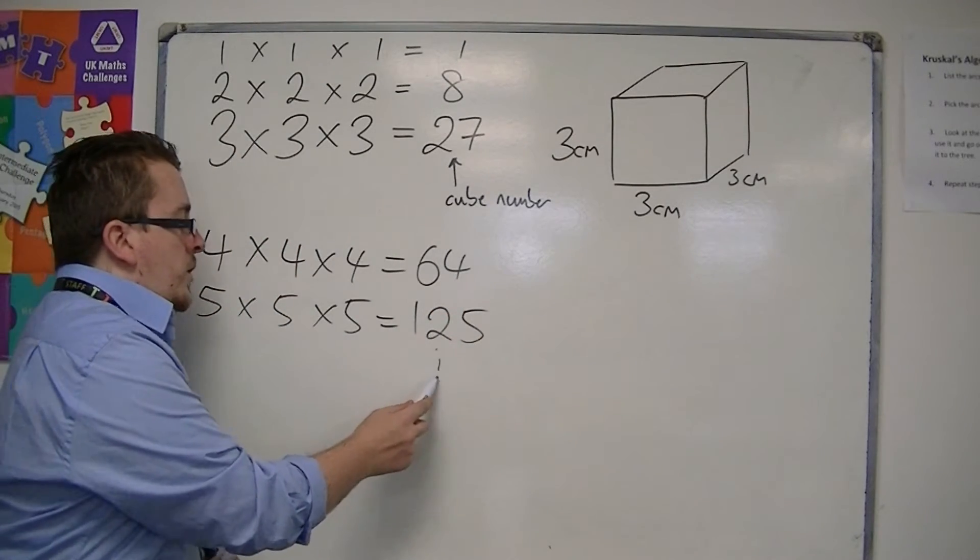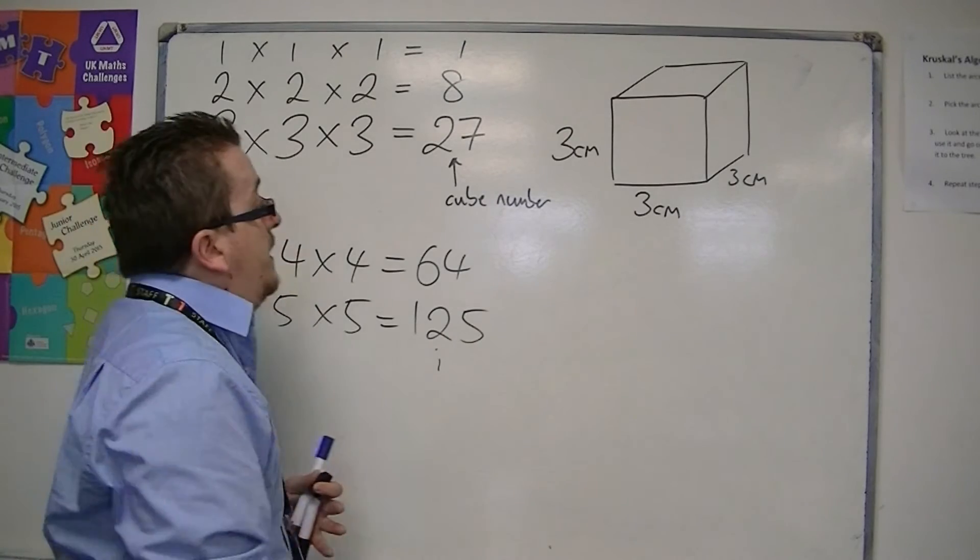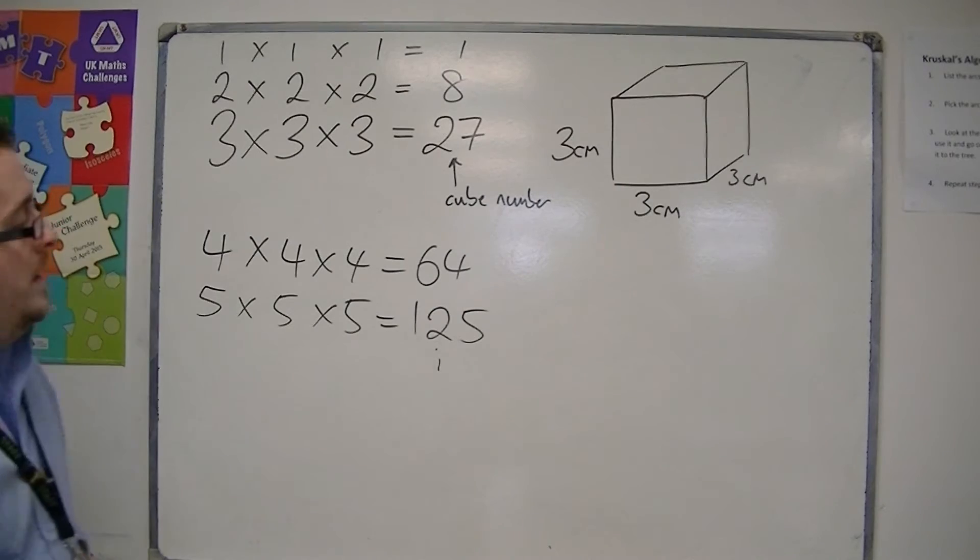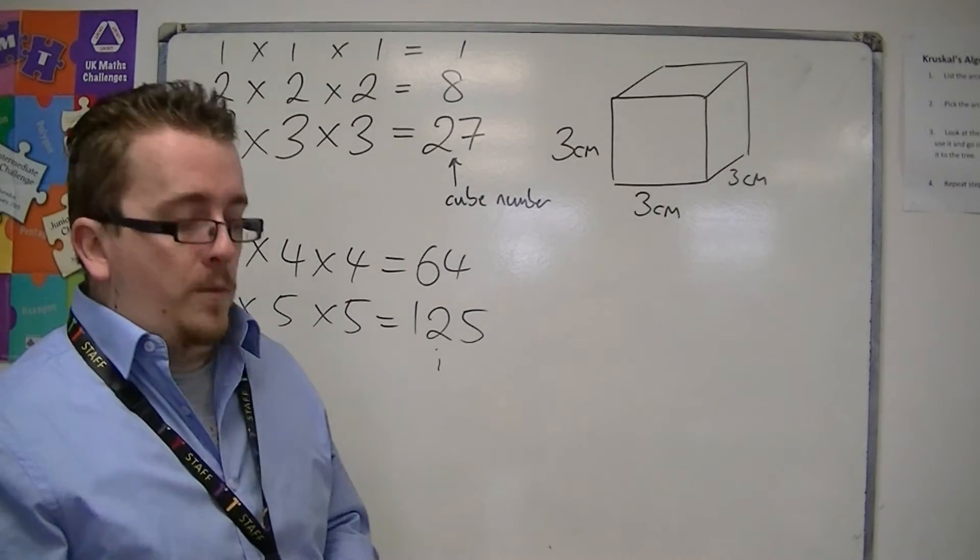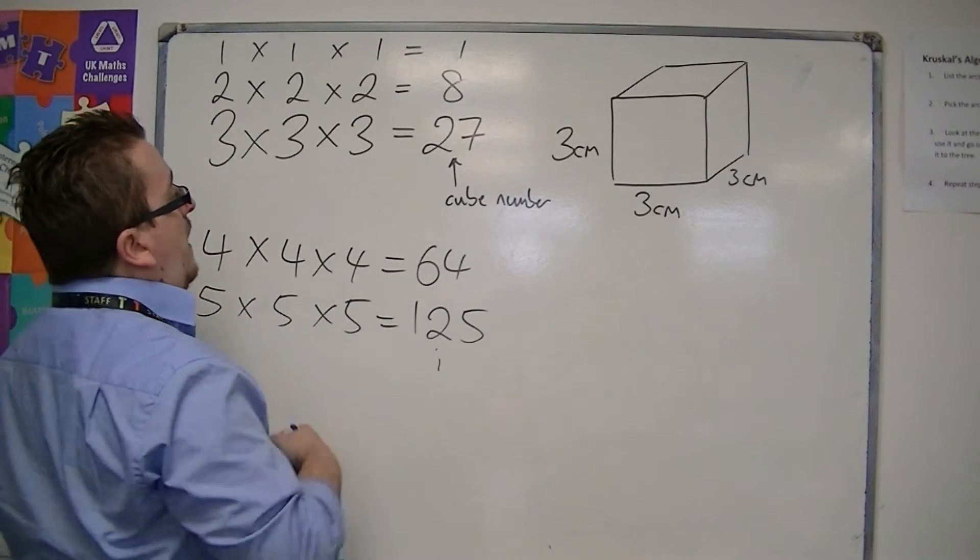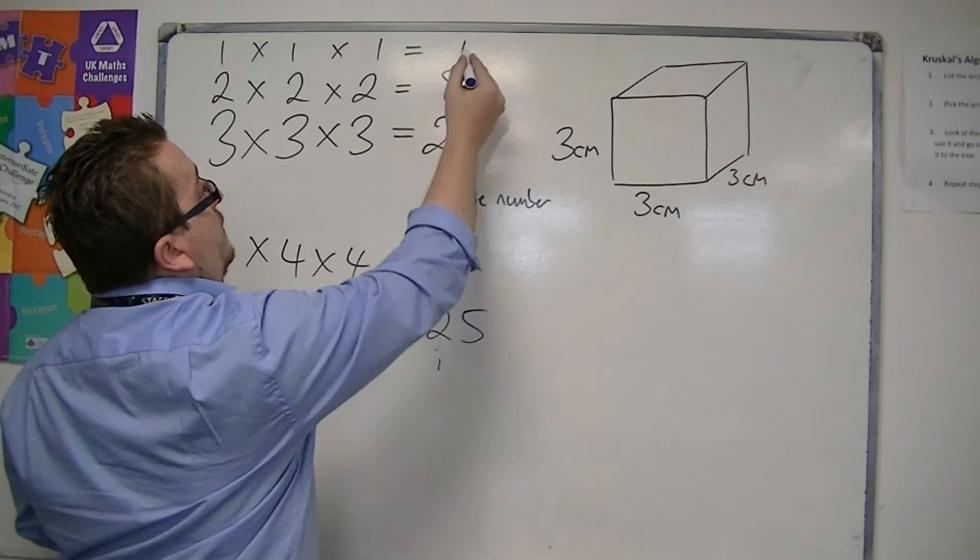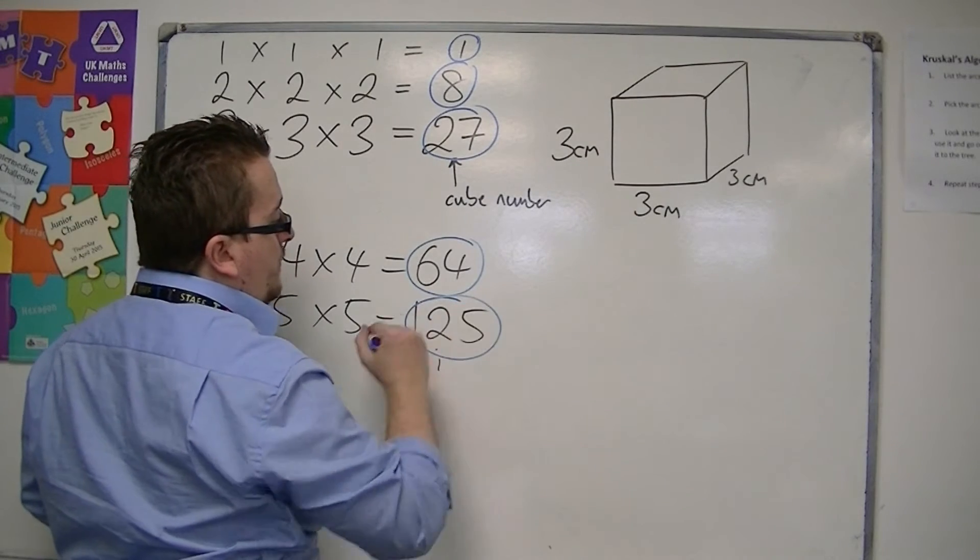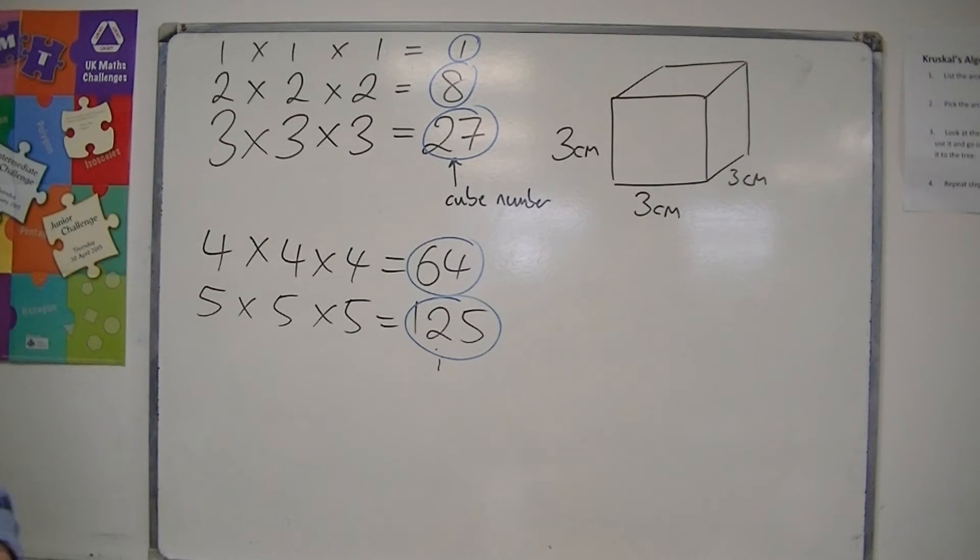Cube numbers, like square numbers, keep on going, and you can see that they increase a lot faster than square numbers. Now, the ones that really you should be able to identify are really these first 5. These are very useful to remember as being cube numbers.